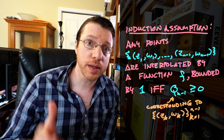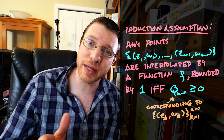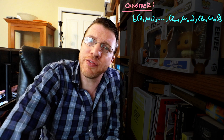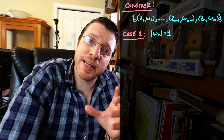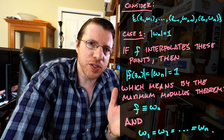Now we have our induction assumption. We assume that for n minus 1 points z1,w1 through z_{n-1},w_{n-1}, that sequence is interpolatable by an analytic function on the unit disk bounded by 1 if and only if the corresponding matrix is positive semi-definite. Now let's add in the extra term wn. First, let's take care of a simple case: if |wn| equals 1, then by the maximum modulus principle, any analytic function inside the disk bounded by 1 that takes magnitude 1 at an interior point must be constant. So w1 through w_{n-1} would all have to equal wn.